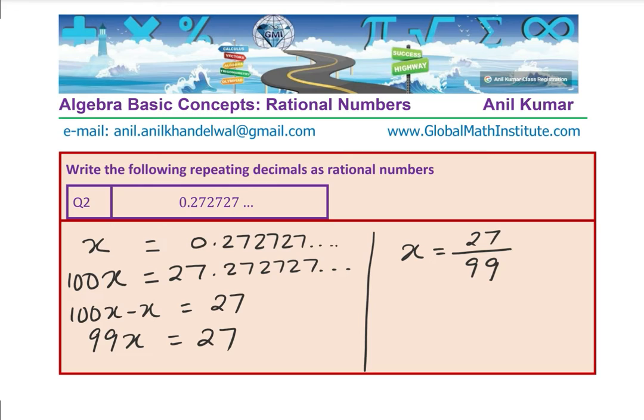That becomes our answer for this rational number. As an exercise, you can do question 2b. Let the number be x equals 0.323232 repeating. Can you do this one?